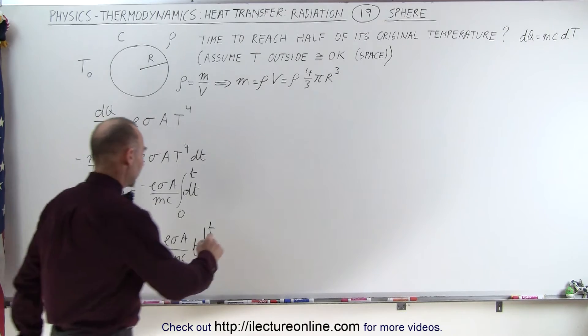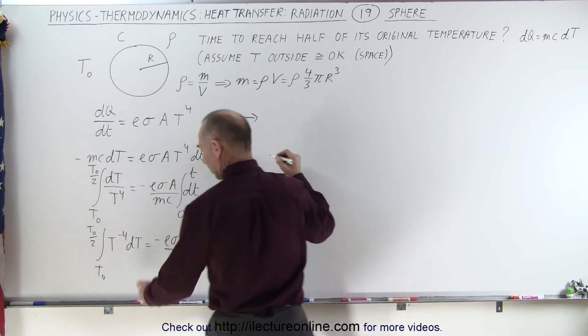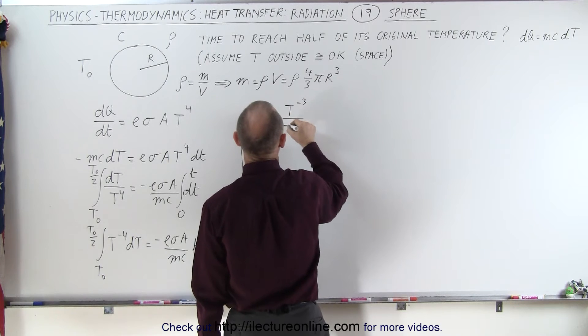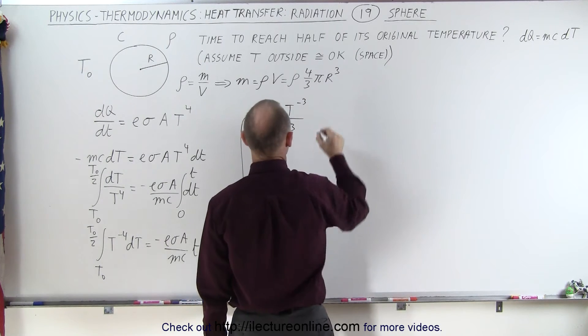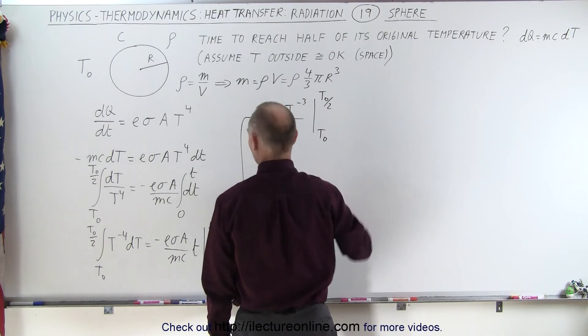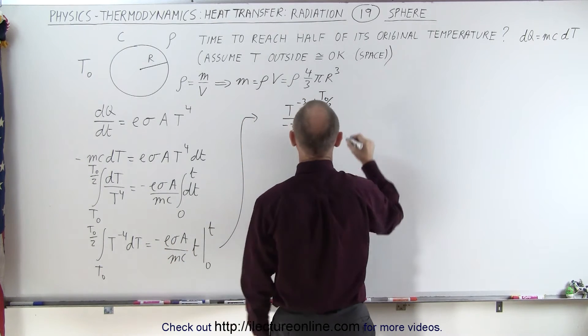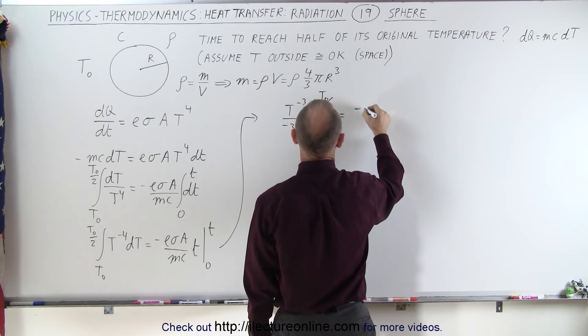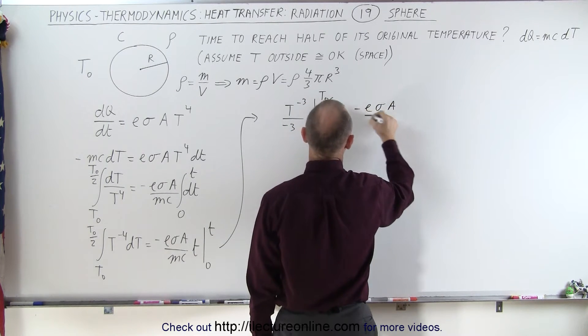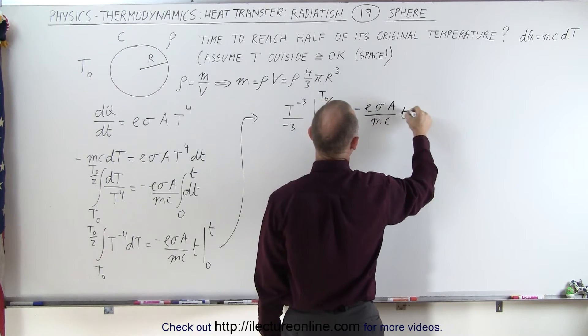The left side, when we integrate it, we get T to the minus three divided by the new exponent minus three, evaluated from T initial to T initial divided by two. And on the right side, when we plug in the limits, we get minus epsilon sigma times A over mc times t.